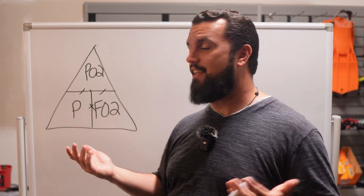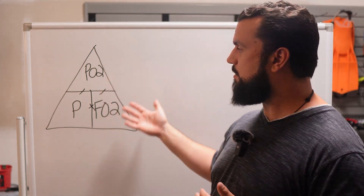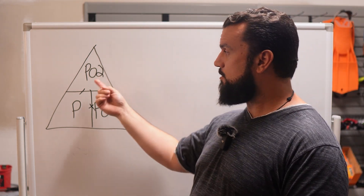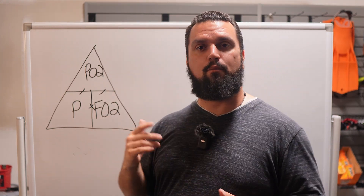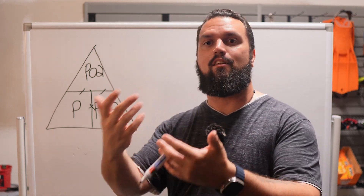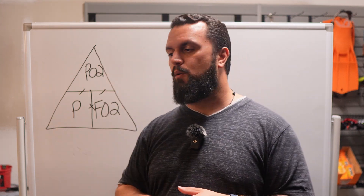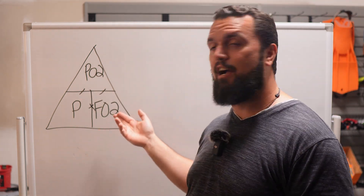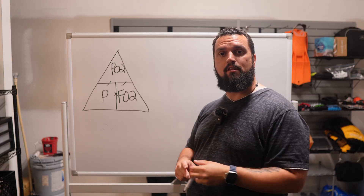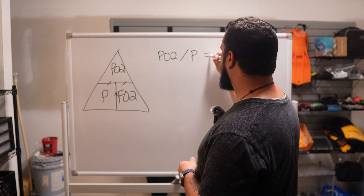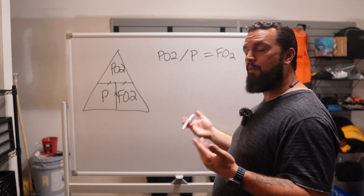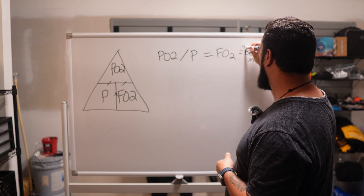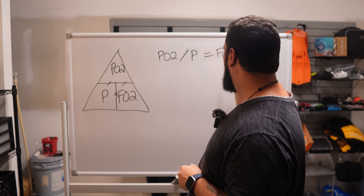Going back to Dalton's Triangle: to find the best mix we need to find our FO2. We know our PPO2 — we don't want to exceed 1.4 — and we can calculate the atmospheric pressure for the depth we're planning to dive to. With those two pieces, the formula becomes: PPO2 divided by P equals FO2, which is our optimal nitrox oxygen percentage — our 'best mix.'